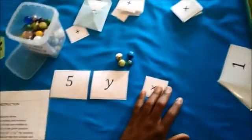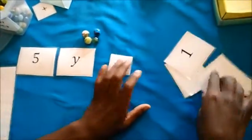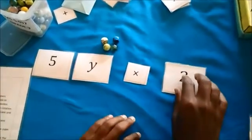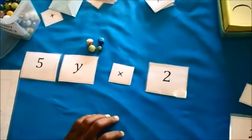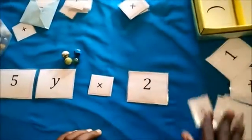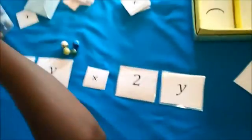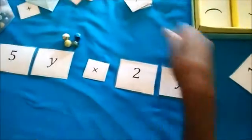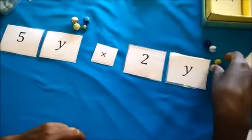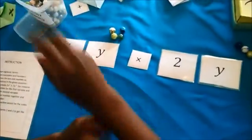Then you multiply, then you put your multiplication sign. Then you take your 2, 2y. You have to take another y. Y to the power 3. Let's take 3 more marbles: 1, 2, 3.